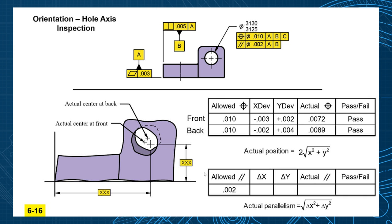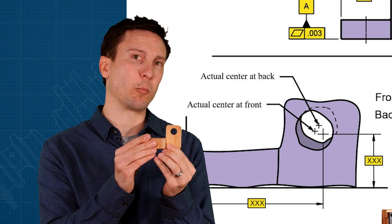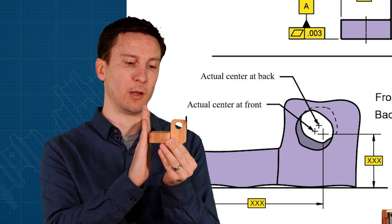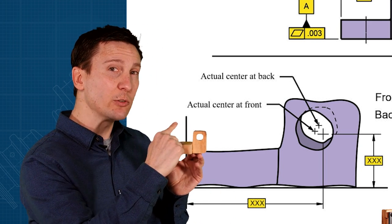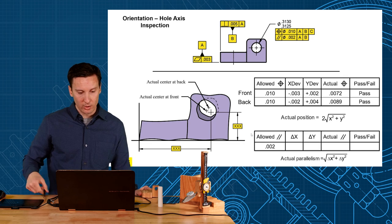So I'd like to explain this a little bit more with the inspection on this feature. How would you inspect parallelism and how would the data come back to you? So what I've done is set the part up relative to your datum reference frame. And the imperfect part is shown and look how that hole is going to be tilted relative to its true position.